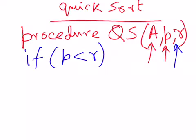r is the last element, and in this particular case we will also choose r as the pivot element, so the pivot and the last element are the same. If p less than r, what it means is that there are more than one elements in the array that we are going to sort, and in that case we have to partition the array.